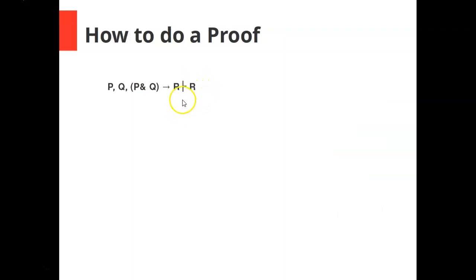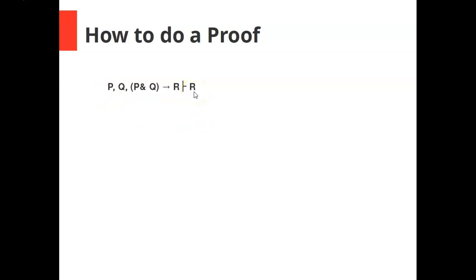How do you do a proof? We're going to add one symbol: the little turnstile, which we'll call our inference bar. If you see a sequence like this with the inference bar, what that means is: given these sentences on the left, show that you can get or prove the sentence on the right. For example, if you have P, Q, and if P and Q then R, show that R is also true using the rules.